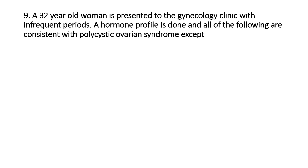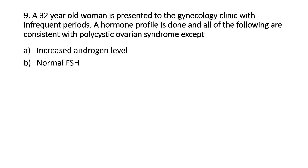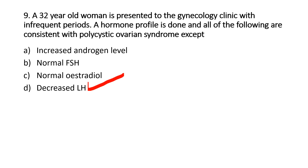A 32-year-old woman presented to the gynecology clinic with infrequent periods. A hormone profile is done. All of the following are consistent with polycystic ovarian syndrome (PCOS) except: Option A, Increased androgen level; Option B, Normal FSH; Option C, Normal estradiol; Option D, Decreased luteinizing hormone. Right answer is Option D, Decreased luteinizing hormone. In PCOS, LH is actually increased. This condition involves hyperandrogenism, anovulation, obesity, hyperinsulinemia, type 2 diabetes mellitus, lipid abnormalities, and hirsutism.